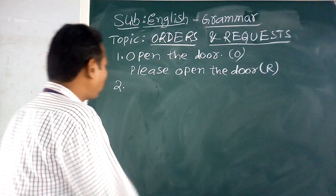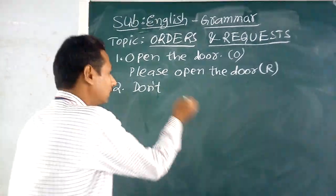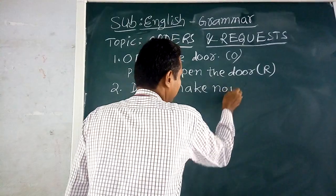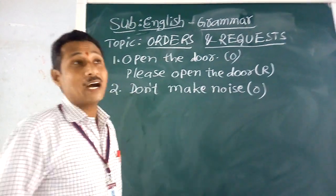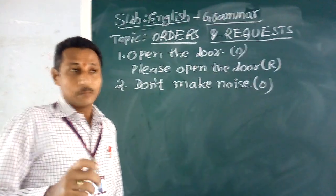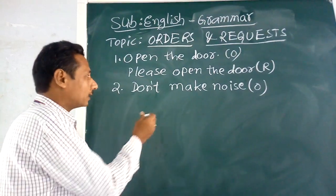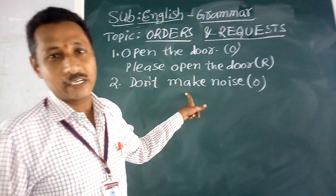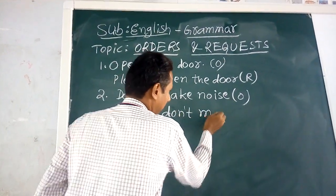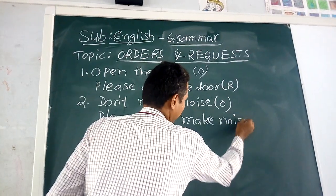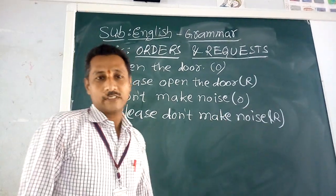Second example: 'Don't make noise.' Whatever sentences we use in our daily life and in our class, we will take those. 'Don't make noise' — this is an order. Teachers will say 'don't make noise' always. But in the meeting hall, suppose delegates are sitting and a prime minister or elders are conducting a meeting, they will speak in a polite manner, like a request sentence: 'Please don't make noise.' 'Don't make noise' is an order; 'Please don't make noise' is a request sentence.